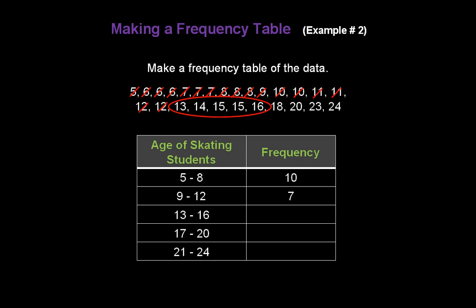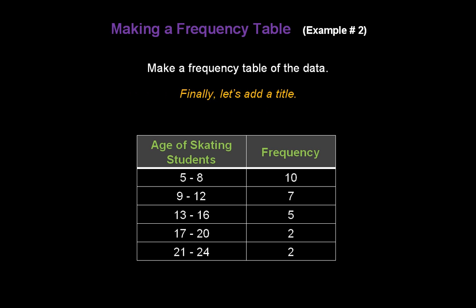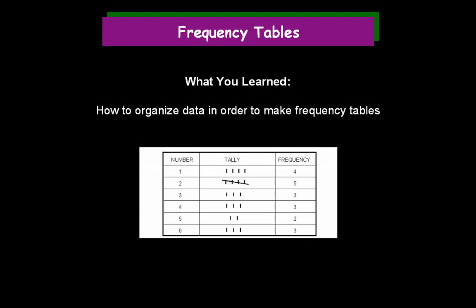For ages seventeen to twenty, there are just two numbers — eighteen and twenty — so the frequency is two. For ages twenty-one to twenty-four, we have two ice skaters in that range — frequency of two. Our frequency table is almost done. We just need to add a title: Ice Skating Student Ages. Once you've added the title, we're done. You've made a frequency table — congratulations! What you learned today is how to organize data in order to make a frequency table.